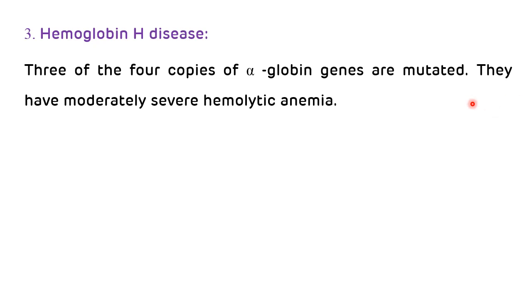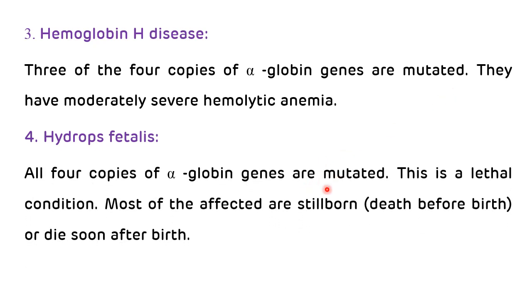The third type of alpha thalassemia is hemoglobin H disease. In hemoglobin H disease, three out of the four alpha globin genes are mutated, and patients have moderate to severe hemolytic anemia. The fourth type of alpha thalassemia is hydrops fetalis. In hydrops fetalis, all four copies of alpha globin genes are mutated, and it is a very lethal and dangerous condition. Most of the affected babies are stillborn — death occurs before birth or they die soon after birth.